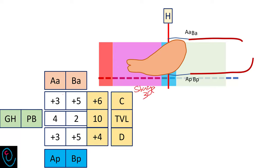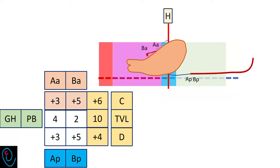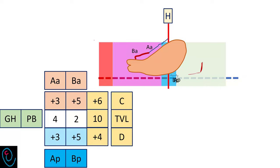In the anterior compartment, A anterior is plus 3 and B anterior is plus 5. This means the anterior compartment is also prolapsed to stage 3. Similarly, in the posterior compartment, A posterior is plus 3 and B posterior is plus 5, meaning the posterior compartment prolapse is also stage 3.